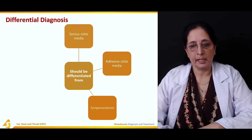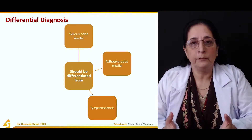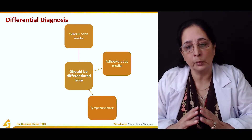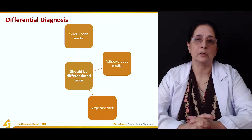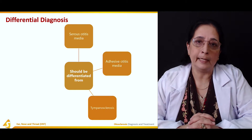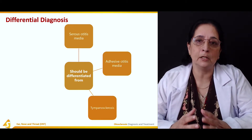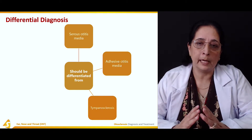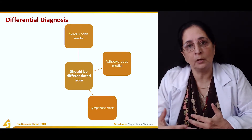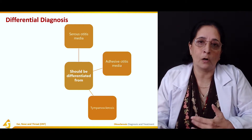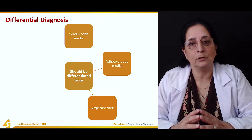The third condition is tympanosclerosis. Like otosclerosis, in which there is bony formation causing hardening of the bone and ear, tympanosclerosis is the hardening of the tympanic membrane. Once the tympanic membrane is hardened, there is a loss of mobility of the eardrum. If the tympanic membrane doesn't vibrate with sound waves, those waves are not transmitted to the ossicles. This can cause hearing loss, tinnitus, and vertigo — similar symptoms to otosclerosis.